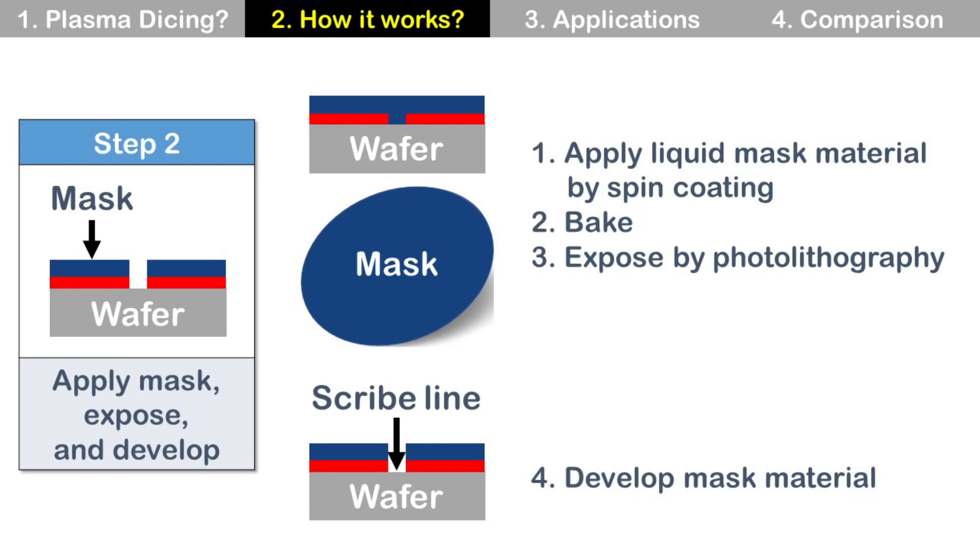Mask is a liquid material coated on the wafer surface by spin coating. Bake the mask material and it turns into solid state from liquid state. Expose and develop. So mask material at the scribe line is removed. Then the scribe line is exposed for the following plasma etching process.